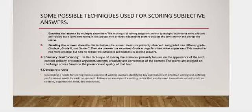Second, grading the answer sheets: in this technique, the answer sheets are first observed and graded into different categories — Grade A for excellent answers, Grade B for good, and Grade C for very poor answers. Then the Grade A copies are examined first, followed by the other copies. This method is not the most practical but helps reduce the influence and bias of the examiner in scoring.